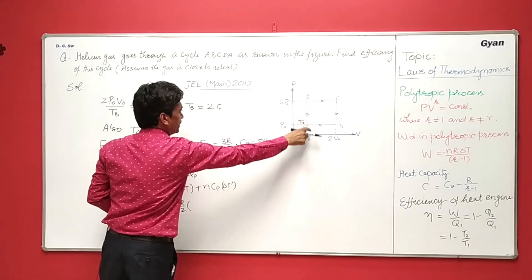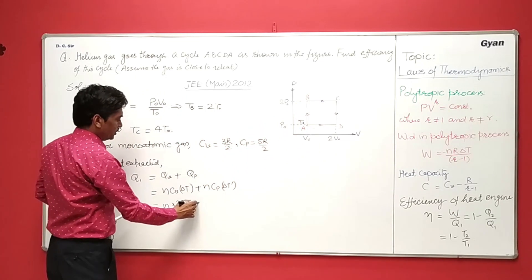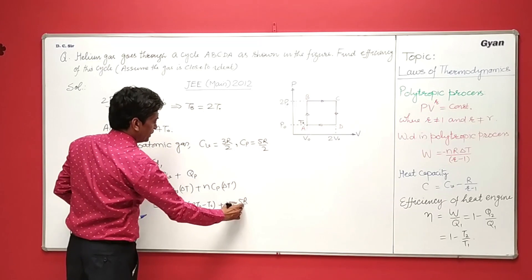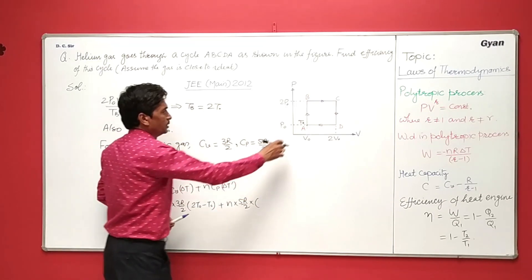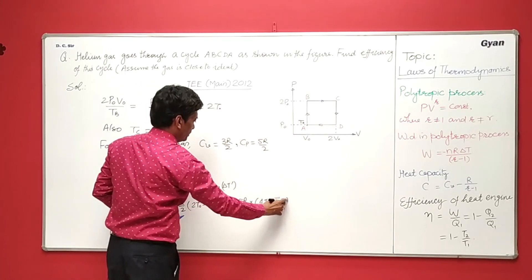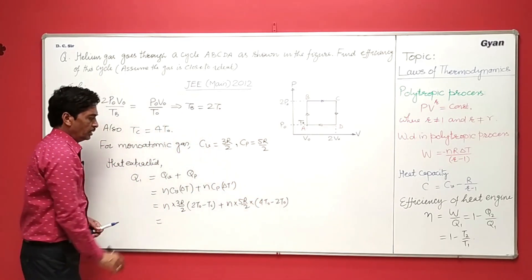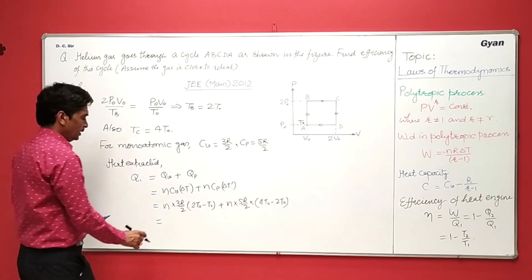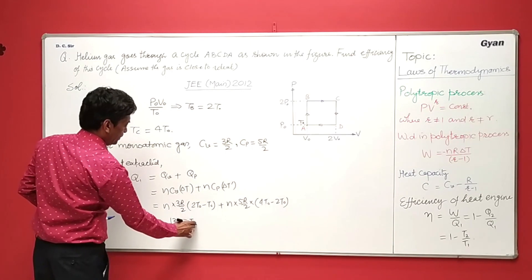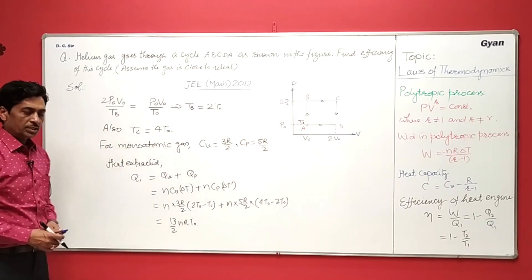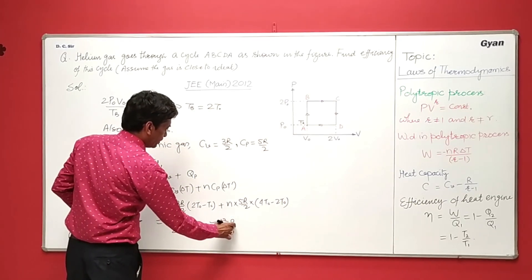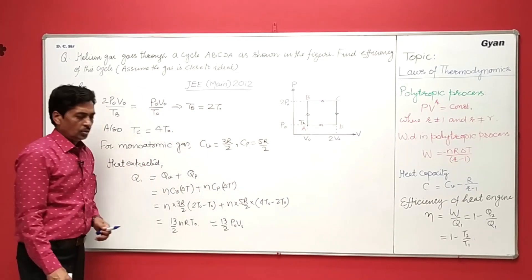The temperature difference from here to here, this will be 2T0 minus T0, and plus NCp is 5R by 2, and temperature difference between here C and B, so this is 4T0 minus 2T0. So when we simplify it, this will be 13T by 2 P0V0.